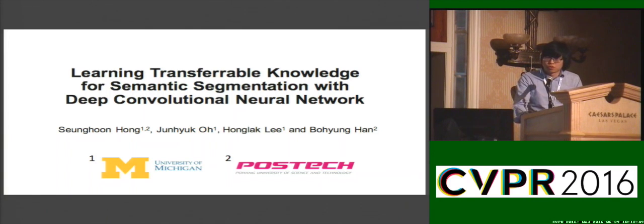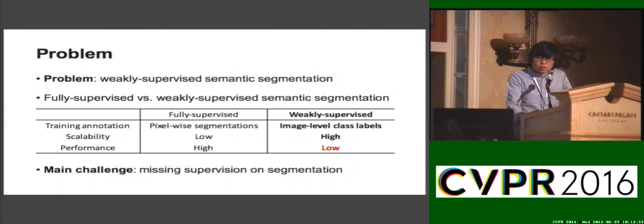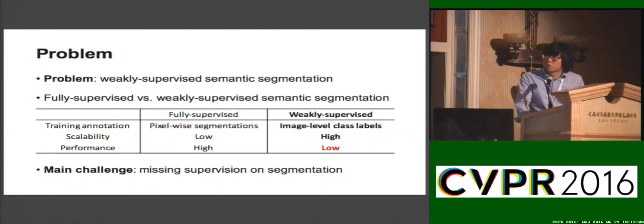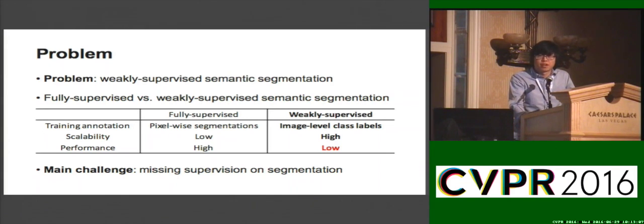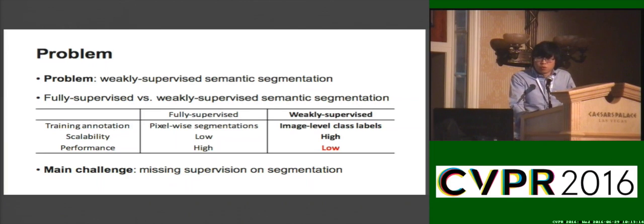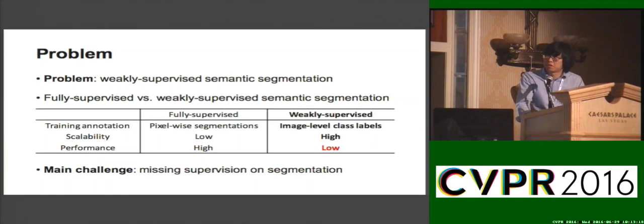My name is Seung Eun Ong and this is joint work with Joon Hyuk-O, Hoong Lak Lee and Bo Yong Han. In this work we consider the problem of weakly supervised semantic segmentation. Contrary to fully supervised approaches which require a large number of training data with segmentation annotations, weakly supervised approaches aim to train a model using much weaker annotations such as image level class labels, allowing us to scale up semantic segmentation by reducing the annotation cost.